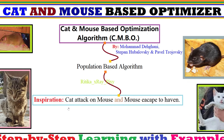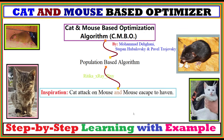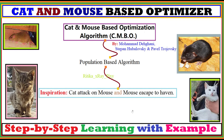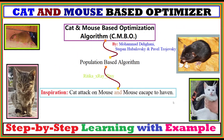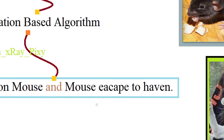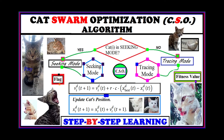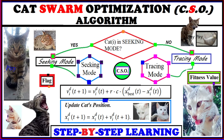The Cat and Mouse Based Optimization Algorithm is a population-based metaheuristic optimization algorithm inspired by a cat's attack on a mouse and the mouse's escape to a safe haven. In real life, cats chase mice and mice try to escape for their survival. This algorithm mimics that behavior — how the cat attacks and how the mouse escapes to a safe place.